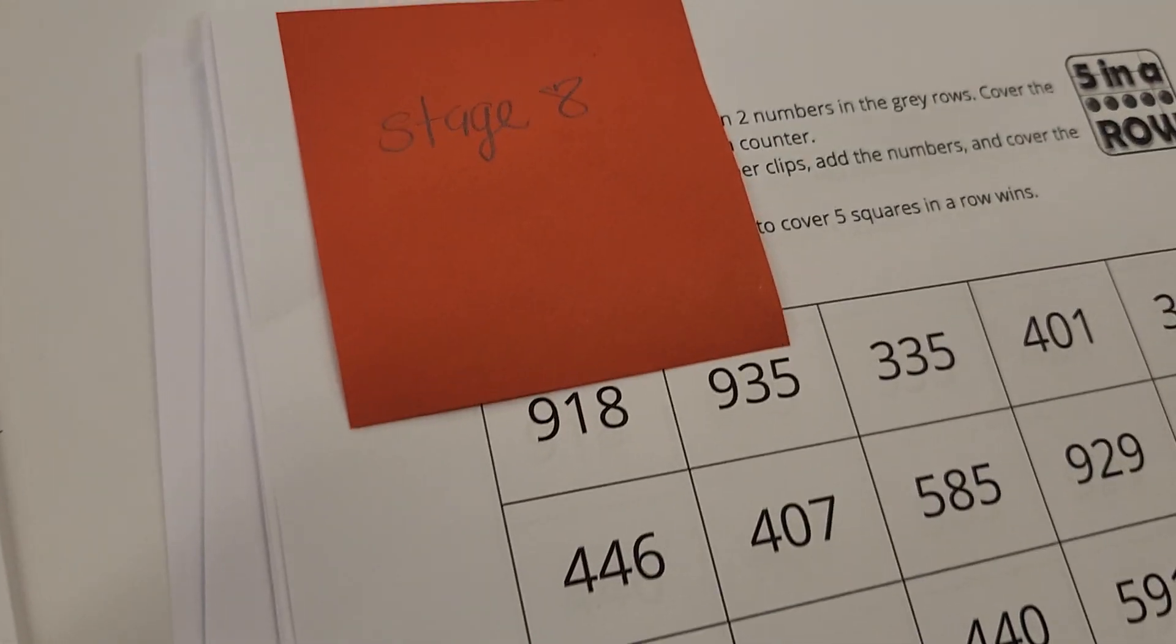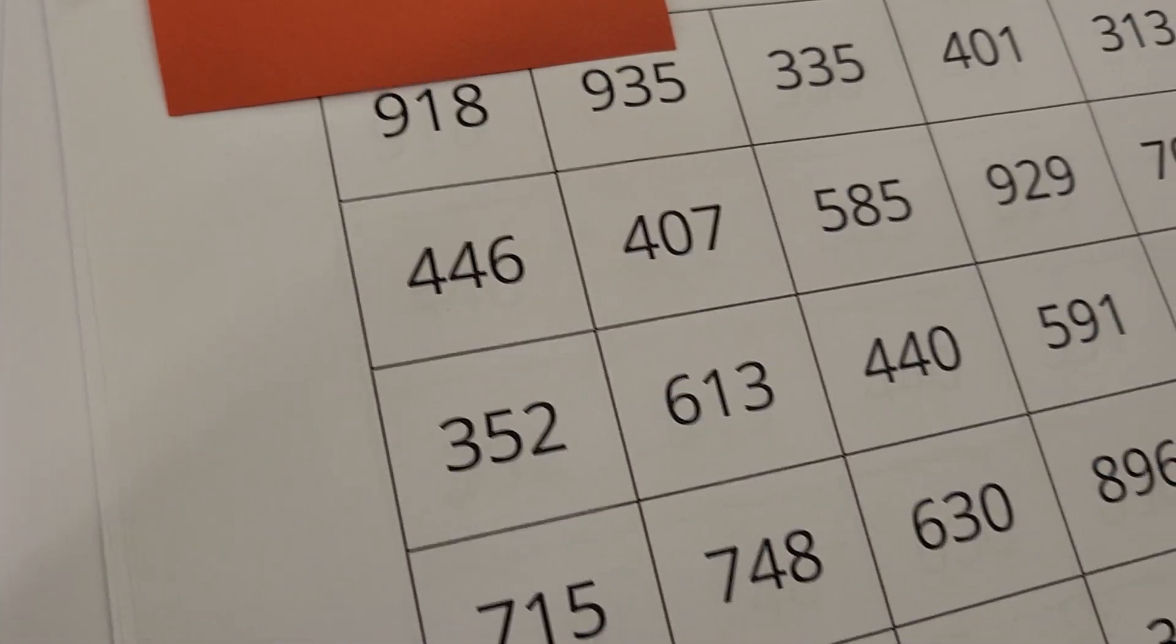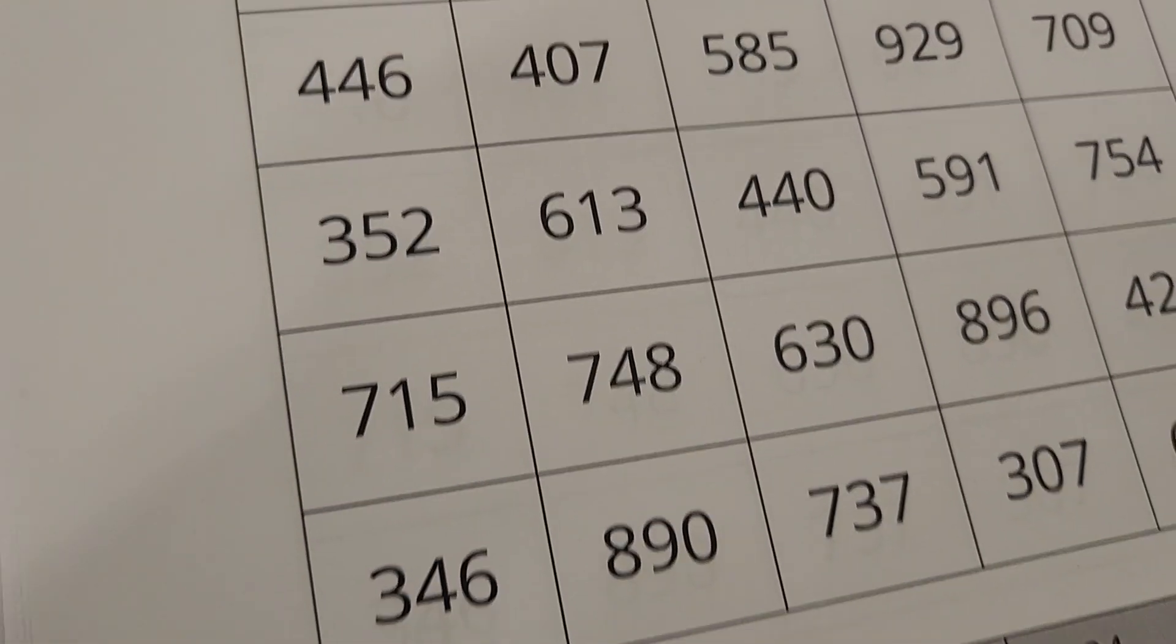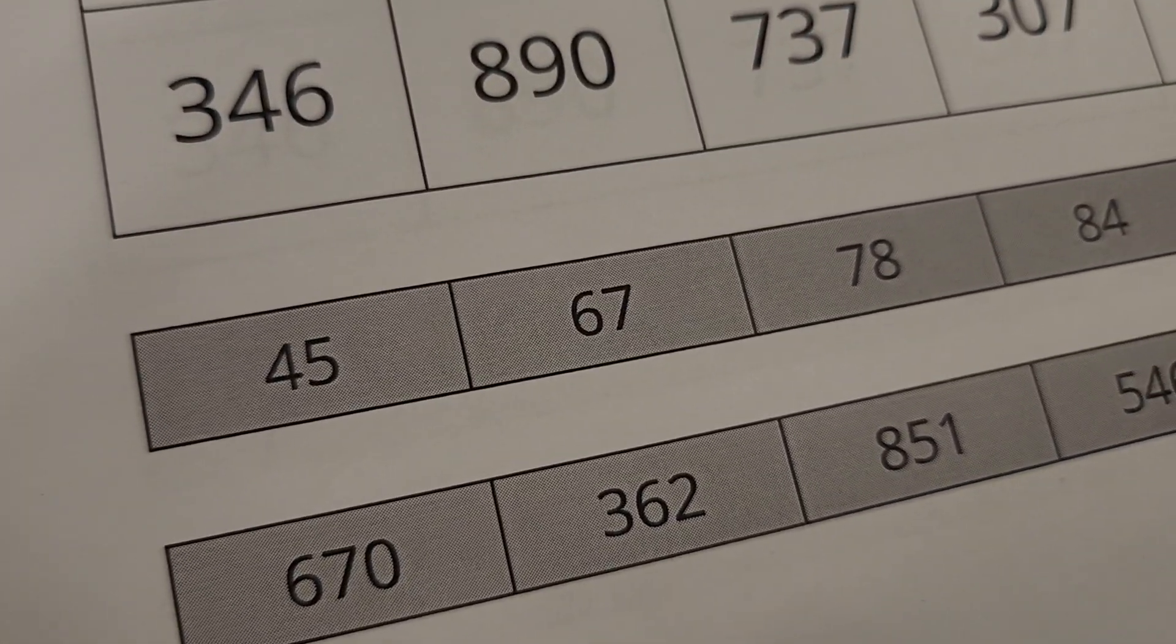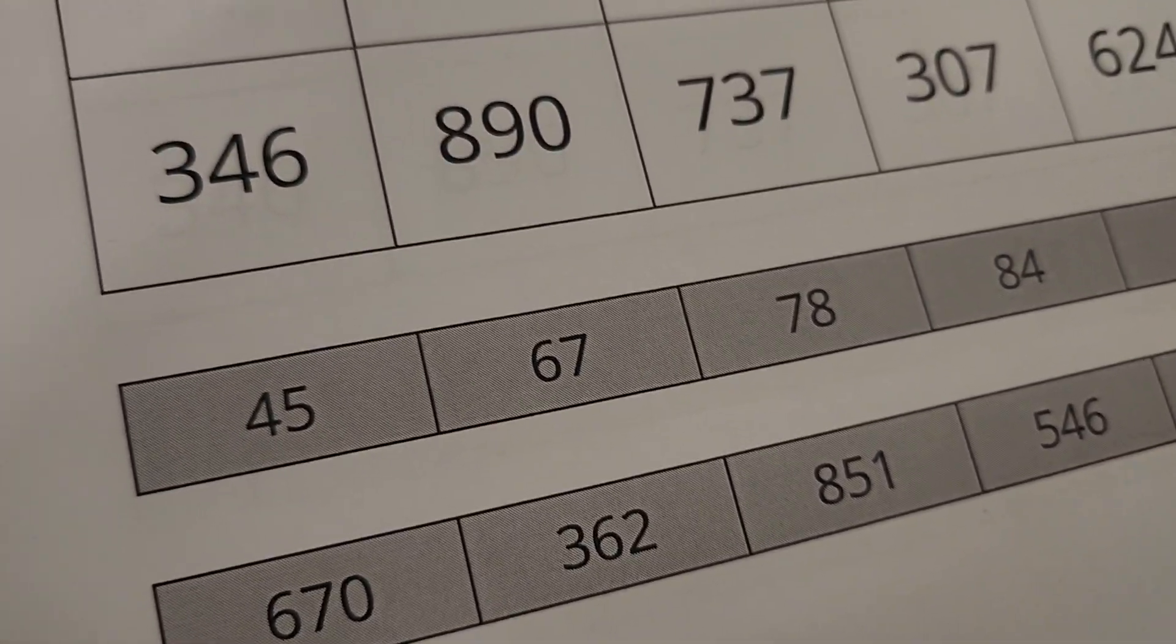And the last stage, stage eight, what do you notice? The numbers are all three digits and the addends are three digits and two digits.